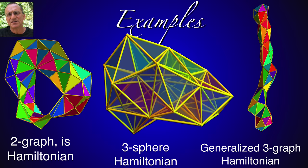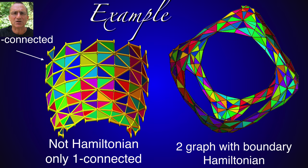More generalized two graphs which are all Hamiltonian. A two graph, a three sphere and a generalized three graph are all Hamiltonian.